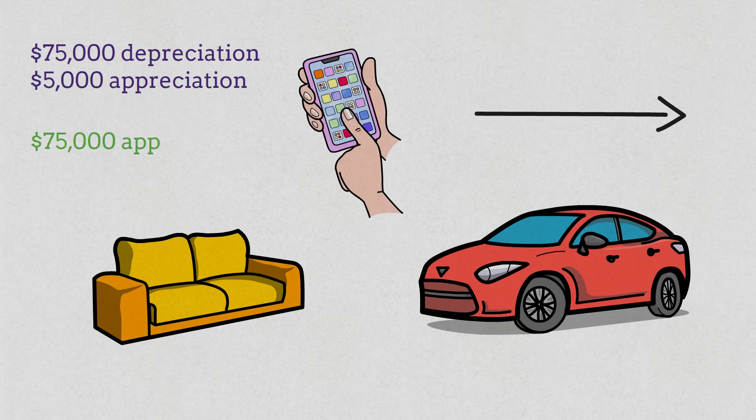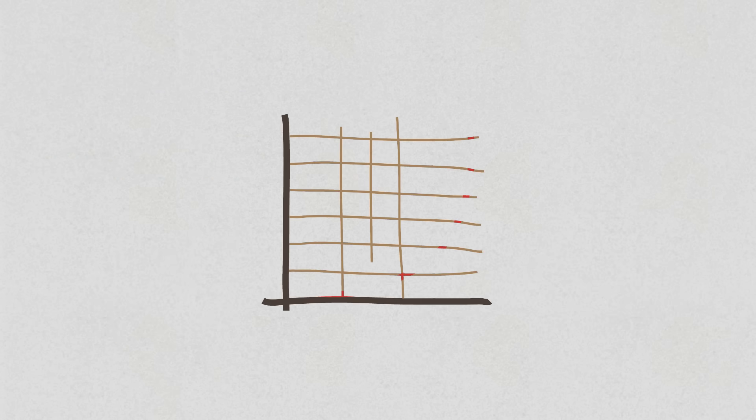Meanwhile, someone who has 90% to 95% of their net worth in growth-oriented assets, stocks, ETFs, real estate, and other investments that compound over time, is essentially letting their money do the heavy lifting. These assets grow without additional effort, and each doubling builds on a bigger base. The more of your net worth you allocate wisely, the faster those doublings start stacking up, and the less you have to actively push your wealth forward.